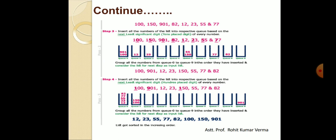After all three passes, the final sorted list is: 12, 23, 55, 77, 82, 100, 150, and 901 — all numbers are now in increasing order. So in radix sort, we start with the units digit (LSB), then the tens digit, and finally the hundreds digit. This is our radix sort method used to sort a list. Thank you for joining today's session.